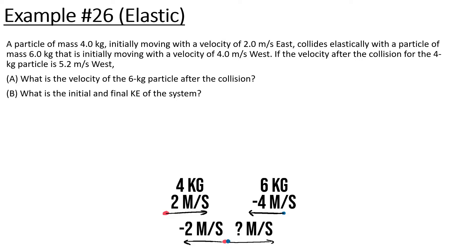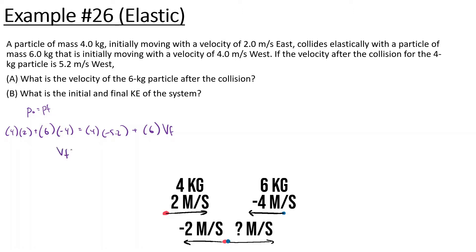A particle of mass 4 kilograms initially moving at 2 meters per second east collides elastically with a particle of mass 6 kilograms initially moving at 4 meters per second west. If the velocity of the 4 kilogram particle after the collision is 5.2 meters per second west, what is the velocity of the 6 kilogram particle after the collision? Using momentum conservation: 4(2) + 6(−4) = 4(−5.2) + 6·V2f. Solving: (8 − 24 + 4×5.2) / 6 gives us 0.8 meters per second.